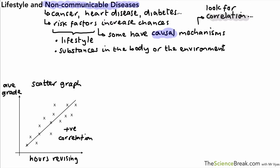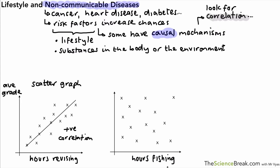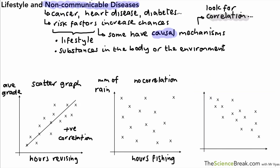In a second scatter graph, the points are plotted all over the place and there's not much correlation. For example, hours fishing on a Sunday afternoon versus millimetres of rain — there's no correlation between those two. Another example shows a negative correlation, such as hours spent sleeping versus the amount of work done — the more you sleep, the less work gets done.